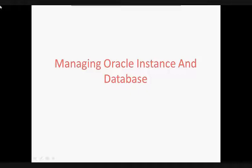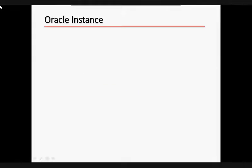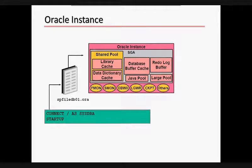To start an instance, the Oracle server reads the initialization parameter file. This file contains many parameters and their values. There are two kinds of parameters: explicit, having an entry in the file, and implicit, having no entry within the file but assuming the Oracle default values. Multiple files can be used for a single database to optimize performance in different situations.